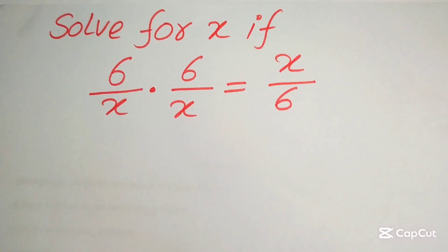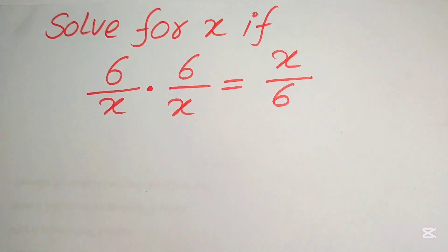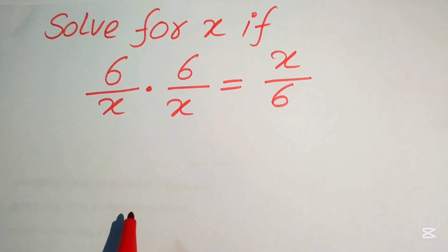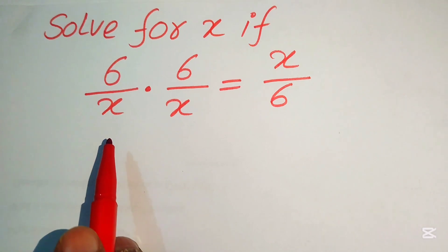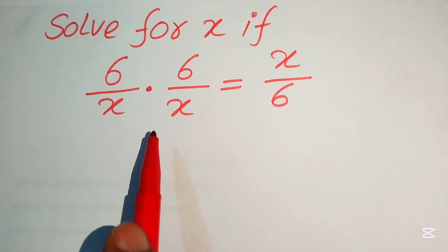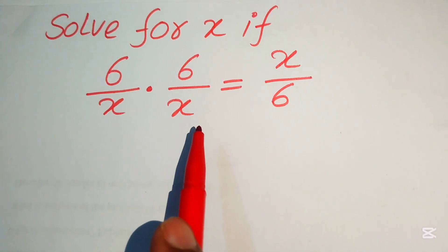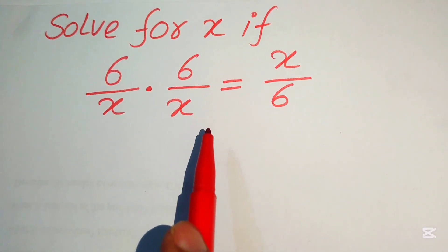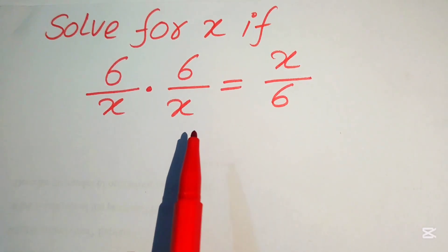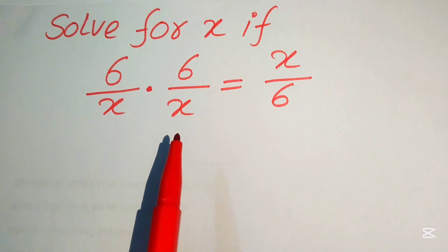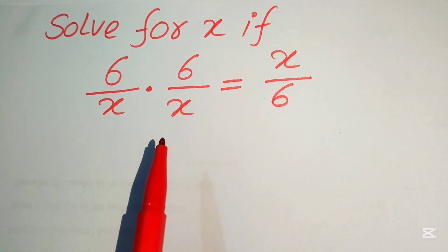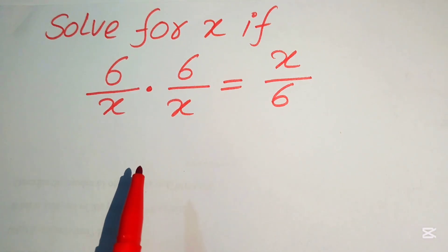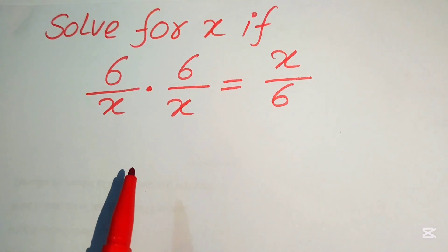Hello everyone, welcome. We solve this nice math olympiad algebra problem. We have (6/x) times (6/x) equals x/6, and we solve this problem for the values of x.